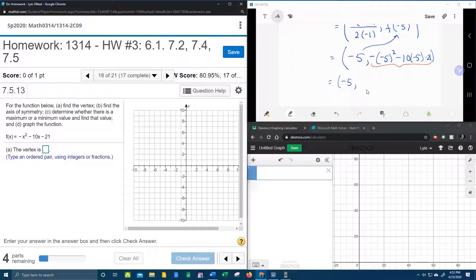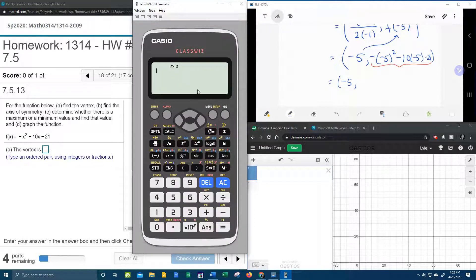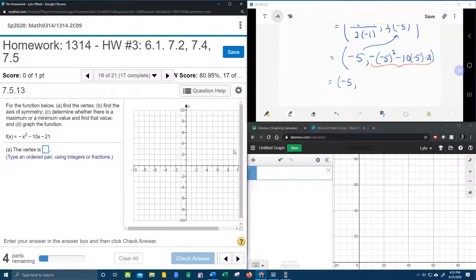So we've got our vertex is negative 5, and then all of this needs to go in the calculator to see what the y coordinate is. So let's pull up our handy dandy ClassWiz, and we've got negative, negative 5 squared minus 10 times negative 5 minus 21. And that's going to be 4.